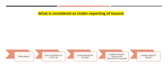Before understanding what constitutes underreporting of income, let us understand the process. First, the assessee files a return doing his own computation of income. Subsequently, the department carries out any auto-correction for situations provided under section 143.1a. After that auto-correction, a notice is given to the assessee to pay the differential tax amount, and in that situation no penalty is levied.